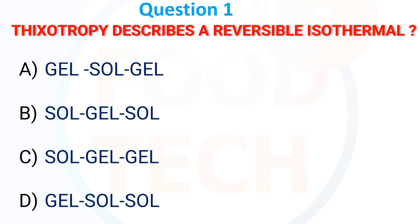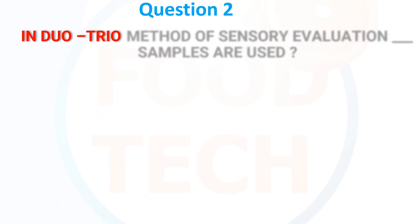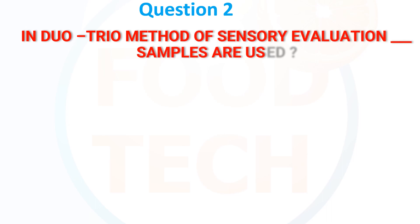The answer is A) Gel-Sol-Gel. In the duo-trio method of sensory evaluation, how many samples are used?